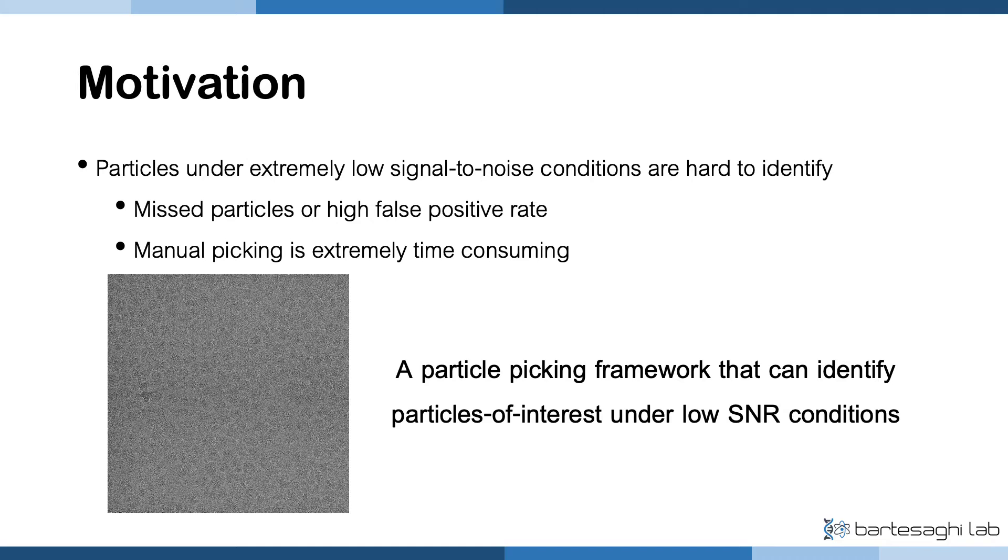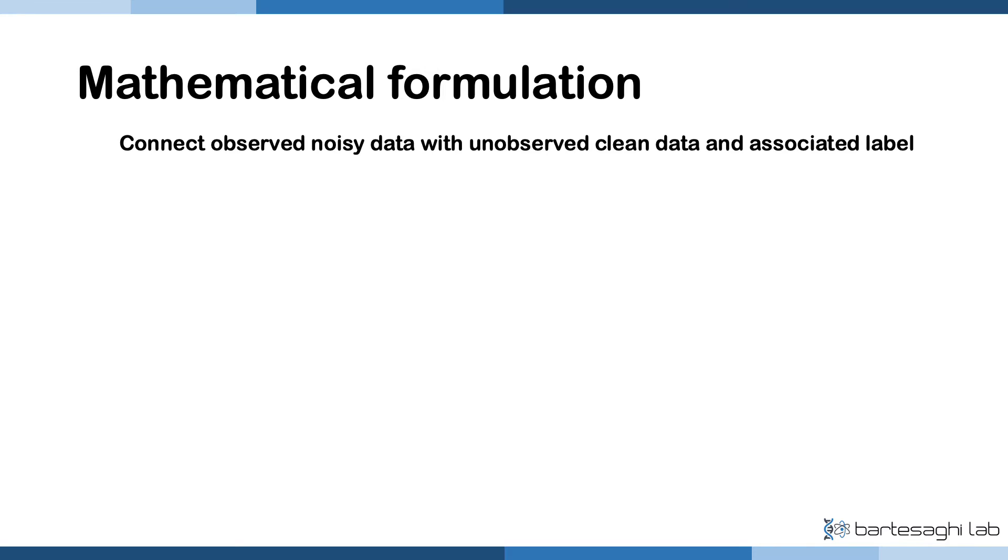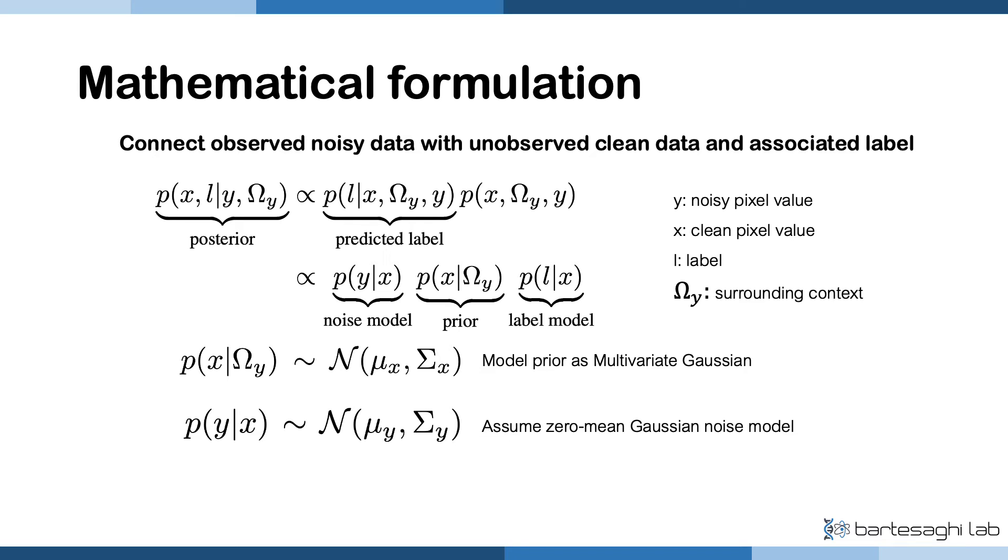To this end, we propose a framework that is able to pick particles under low SNR conditions. To do this, we want to connect observed noisy data with unobserved clean data and its associated label. Specifically, we can write up the posterior joint likelihood of clean pixel value x and its associated label L, given a noisy pixel value y and its surroundings omega y to be proportional to the product of the noise model, the prior belief, and the label model.